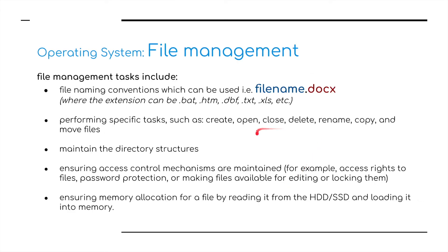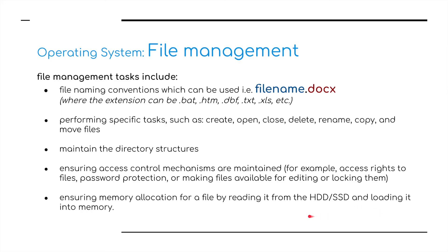File management tasks include file naming conventions — for example a Word document file name with a .doc extension. The OS performs specific tasks such as create, open, close, delete, rename, copy and move files. It maintains directory structures — putting folders within folders and files within those folders. It ensures access control mechanisms are maintained, such as access rights to files, password protection, or making files available for editing or locking them. Finally, it ensures memory allocation for a file by reading it from the hard disk or solid state drive and loading it into memory.